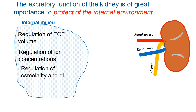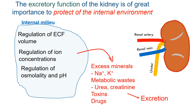Renal excretion plays a very important role in homeostasis. The kidney has to get rid of excess minerals such as sodium and potassium, metabolic waste such as urea and creatinine, and also toxins and drugs. In fact, the kidney has to get rid of anything that we take in excess.